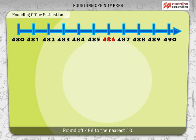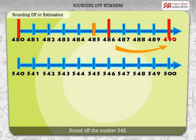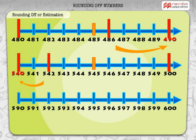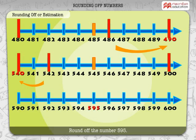Round off 486 to the nearest 10. So, 486 is estimated to 490. Round off the number 542 — 542 is estimated to 540. Round off the number 595 — 595 is estimated to 600.